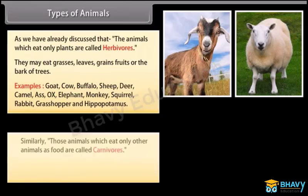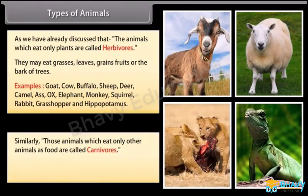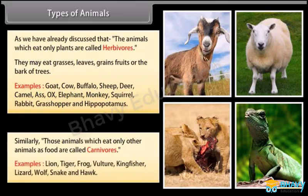Those animals which eat only other animals as food are called carnivores. Examples: Lion, Tiger, Frog, Vulture, Kingfisher, Lizard, Wolf, Snake, and Hawk.